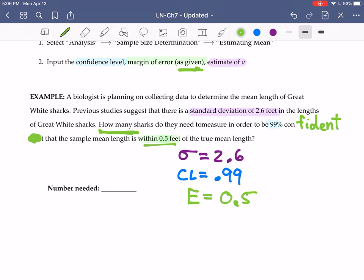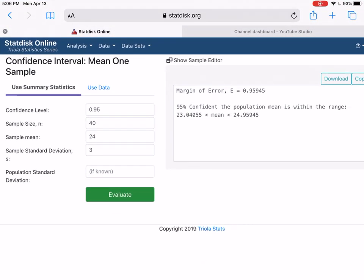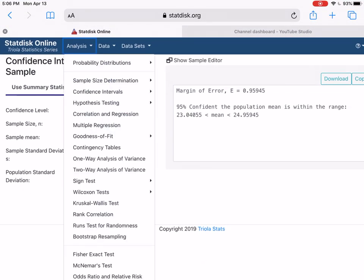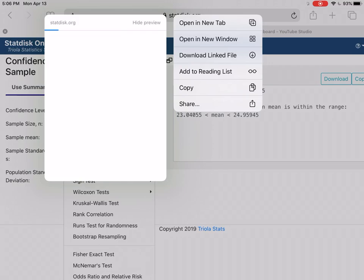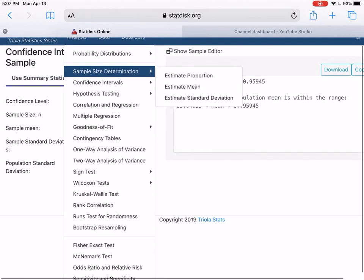We don't need to change this or move decimals or anything. That's the information we're going to StatDisk with. We're going to choose Analysis. We're trying to determine a sample size, so we're going to go with Sample Size Determination, and we want to try to estimate a mean.